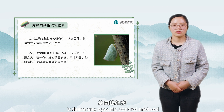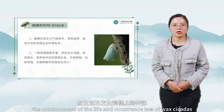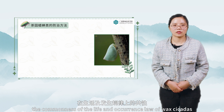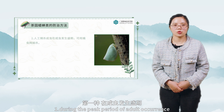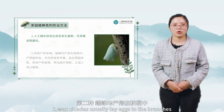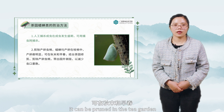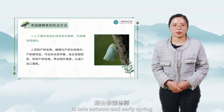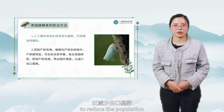Is there any specific control method for waxicadas in the tea garden? According to the common life and occurrence laws of waxicadas, the following methods can be taken to control them. During the peak period of adult occurrence, waxicadas can be caught and killed by traps. Waxicadas usually lay eggs in the branches and the spawning marks are obvious. It can be pruned in the tea garden in late autumn and early spring — cut off the spawning tips and destroy them outside the garden to reduce the population.